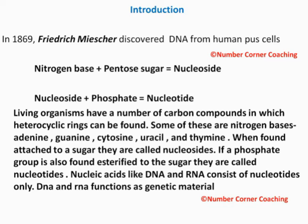In 1869, Frederick Miescher discovered DNA, which he called Nuclein. There are many carbon compounds in living organisms. These carbon compounds contain nitrogen bases, which are called Nucleosides. These are called Nucleic Acids, which are polymers made of monomer units.